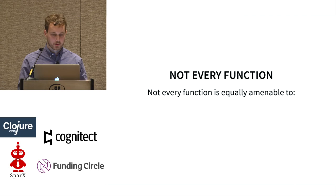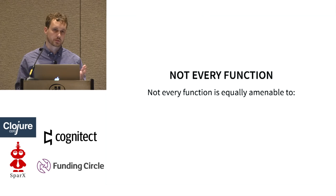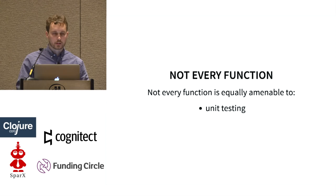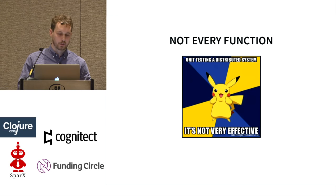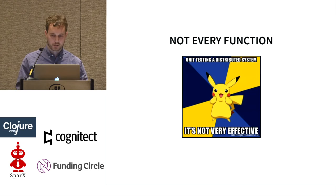Part of the reason is our source code isn't all the same — you have different functions, different kinds of code, different system architectures. So you don't want to unit test everything, and even the things you can unit test, you don't always want to. You don't want to unit test a distributed system or anything with races. You don't want to unit test throwaway code or prototypes.